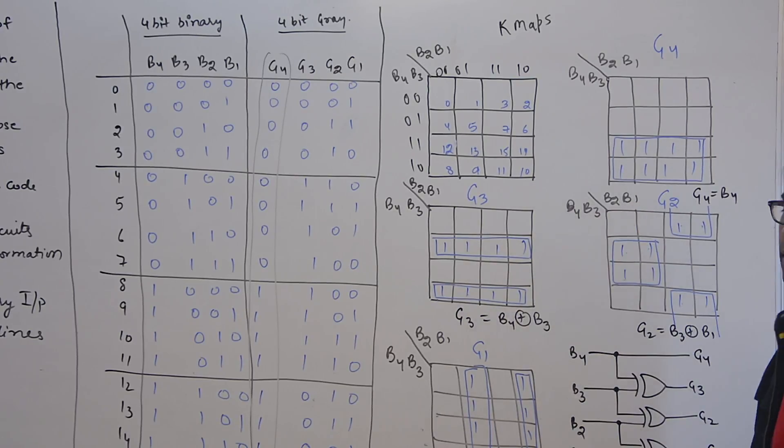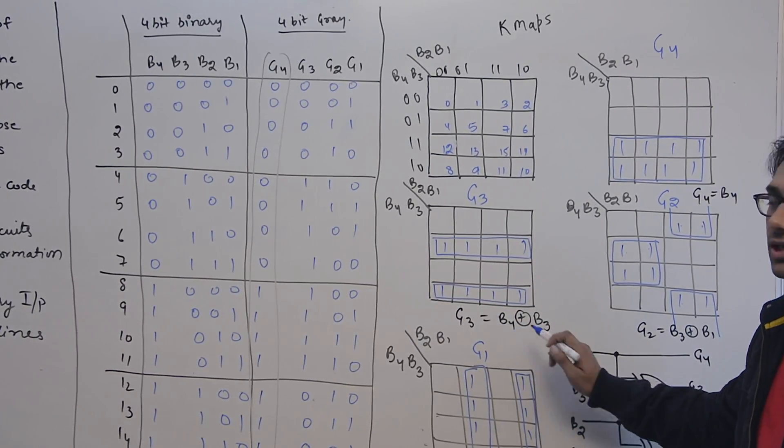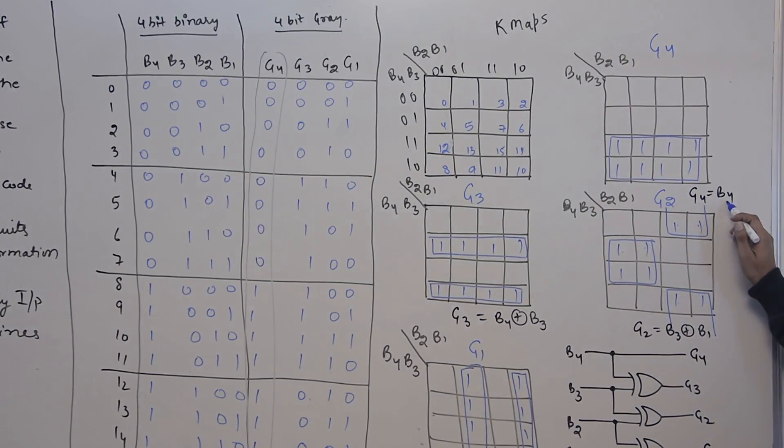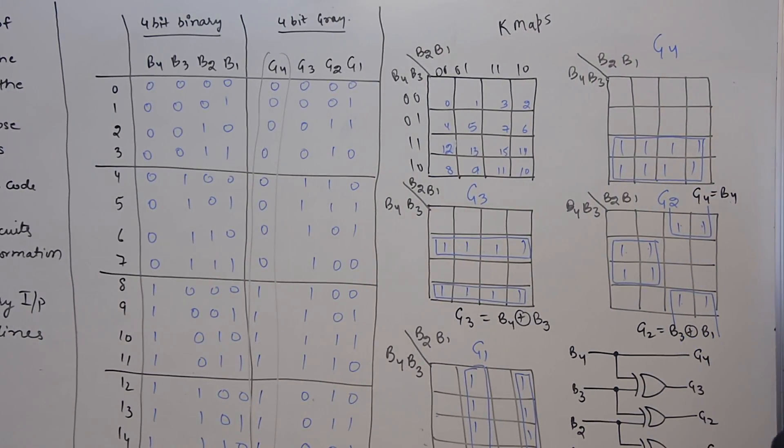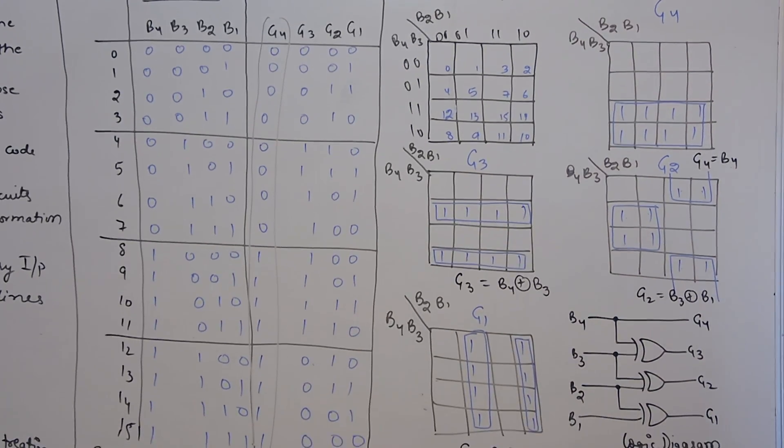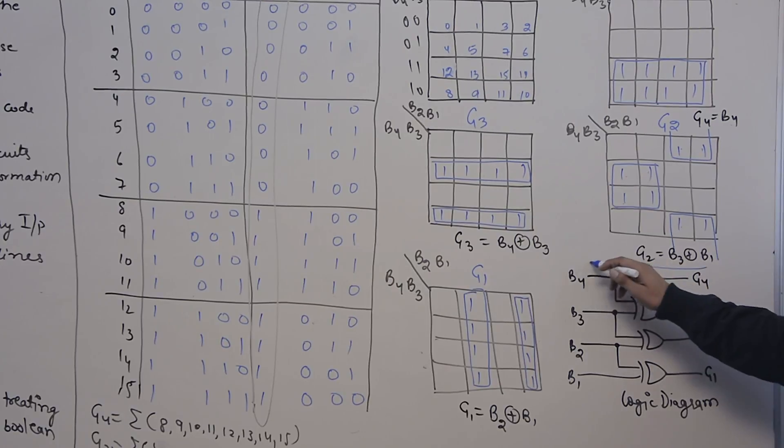So you can make an equation for all these K-maps. For example, for this K-map, you can represent this K-map by B4 XOR B3, this K-map by B4, this K-map you can represent by B1 XOR B3, and this K-map by B1 XOR B2. And then you can represent all these XORs using this circuit.